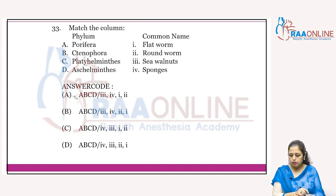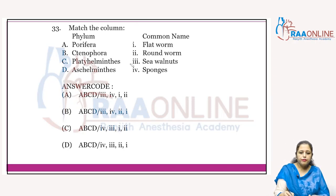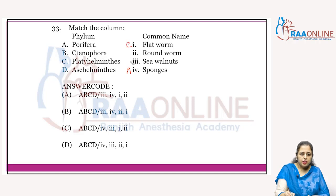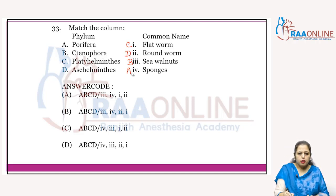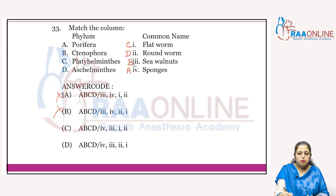Match the column: Porifera — all sponges come under phylum Porifera. Platyhelminthes — flatworms. Ctenophora — sea walnut. Aschelminthes — roundworm. A4 — A and B cancelled. B3 in both. C1 — answer is C.